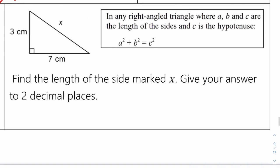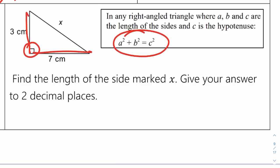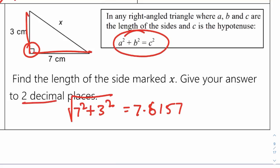Find the length of the side marked x. Give your answer to two decimal places. It's a right-angled triangle with two short sides given, so we can use Pythagoras' Theorem to find the hypotenuse. We need to do the square root of 7 squared plus 3 squared — that gives the square root of 58, which is 7.6157. Rounded to two decimal places, that is 7.62 centimetres.